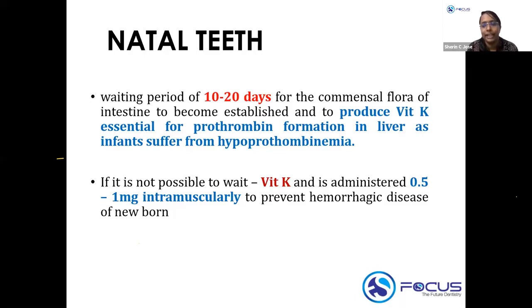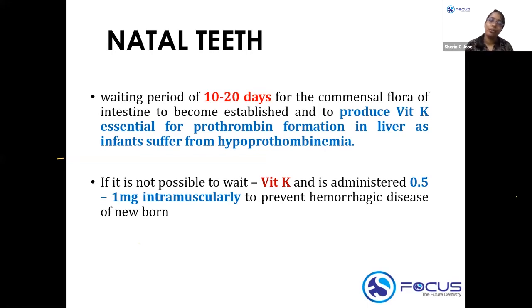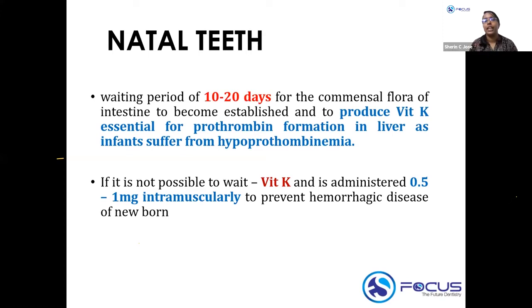The vitamin K-dependent clotting factors are 2, 7, 9, and 10. Clotting factor 2 is prothrombin. The problem in infants is that vitamin K — essential for prothrombin formation — is produced by the commensal flora of the intestine, but that flora must first become established before vitamin K and prothrombin can be produced.